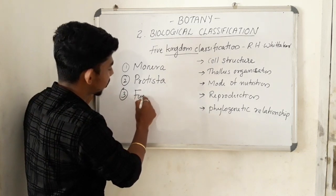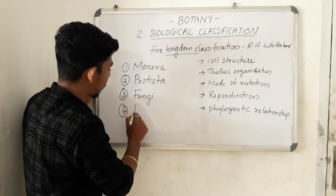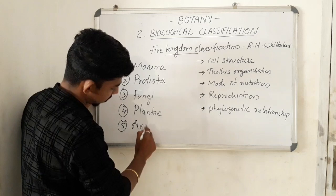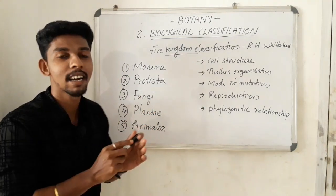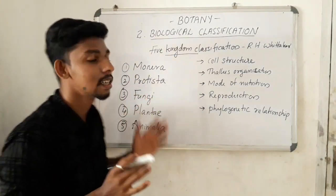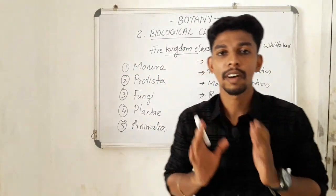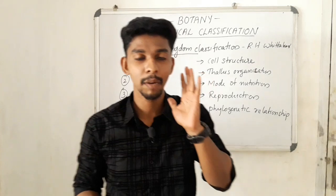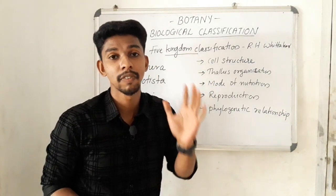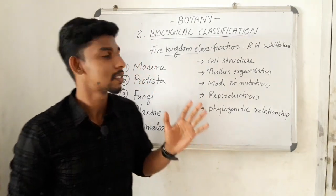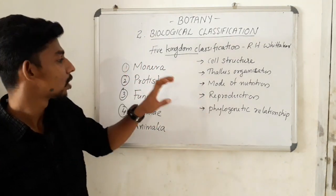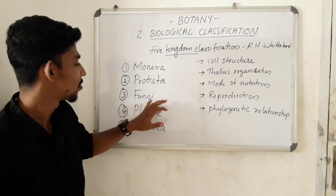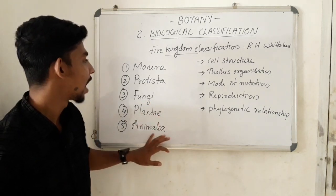R.H. Whittaker classified the organisms into five kingdoms: Kingdom Monera, Kingdom Protista, Kingdom Fungi, Kingdom Plantae, and Kingdom Animalia.